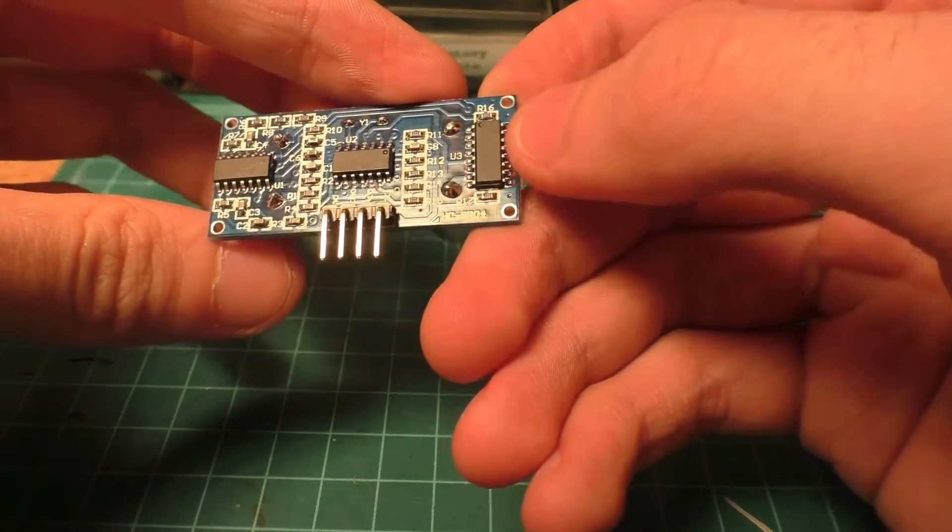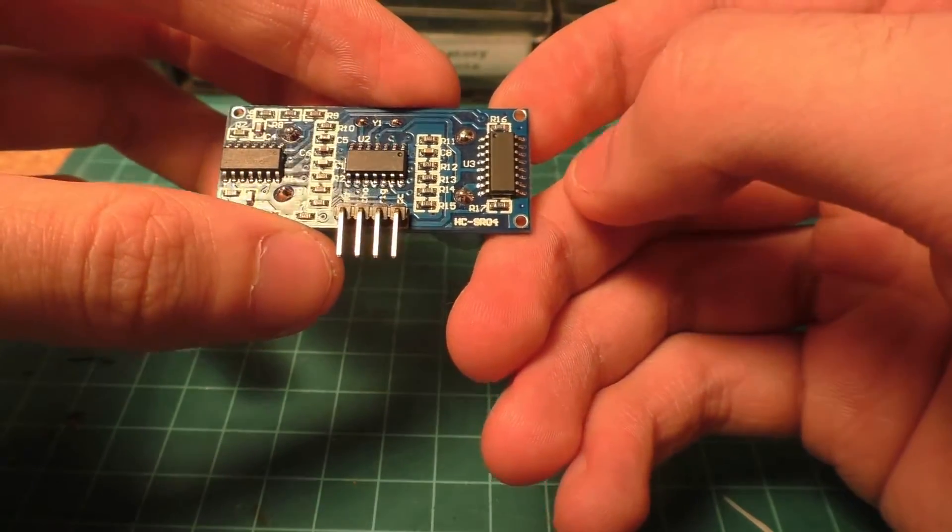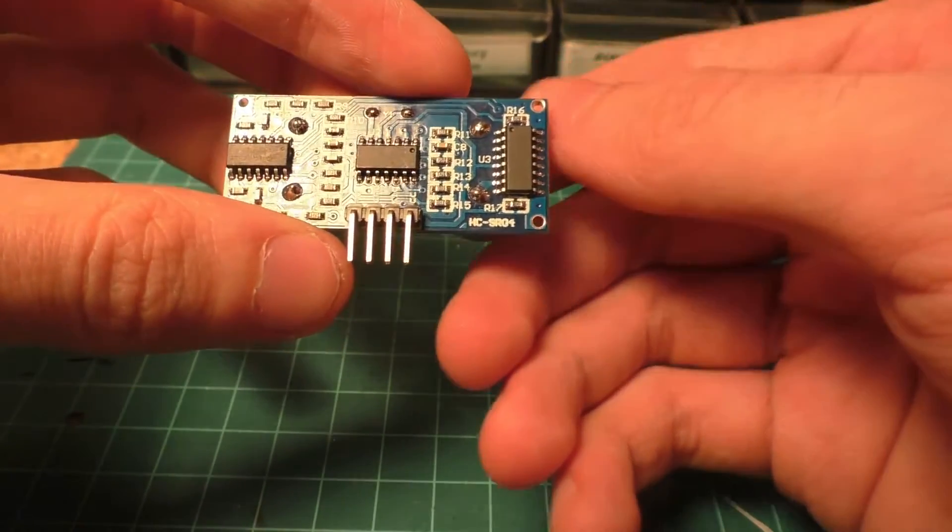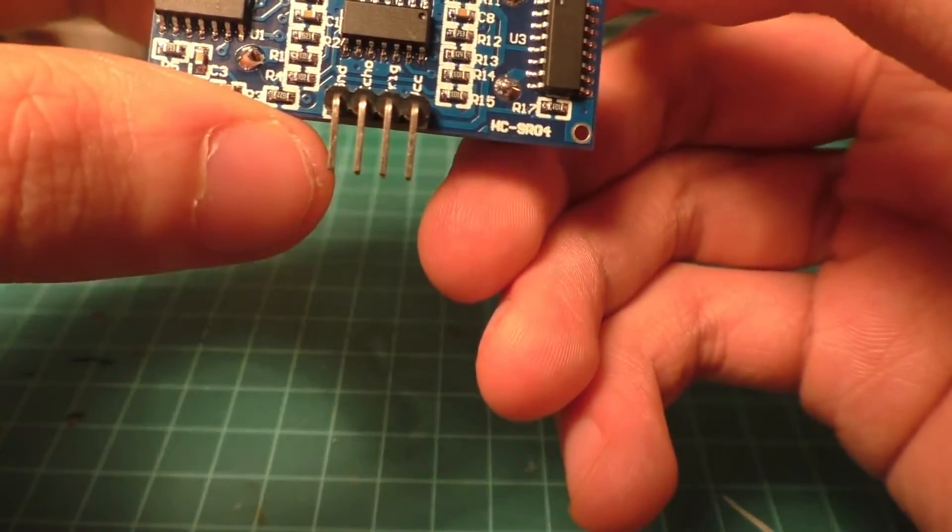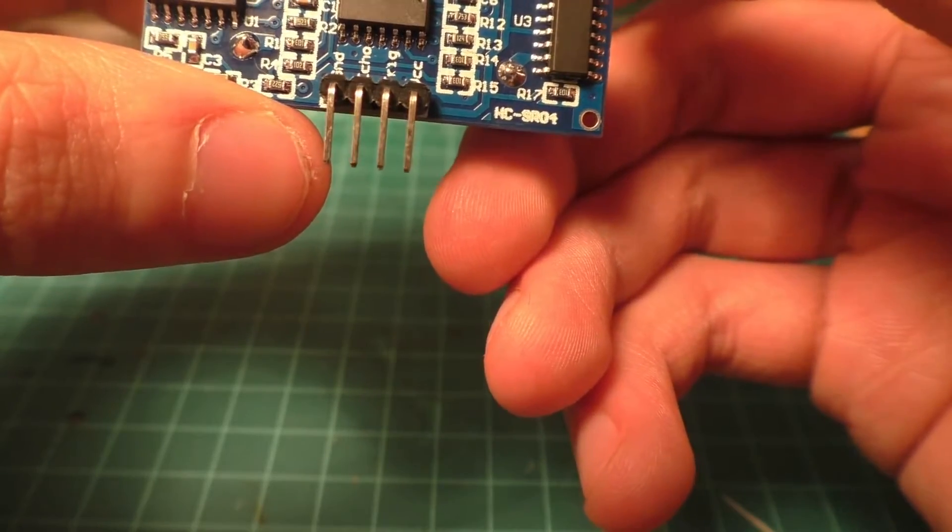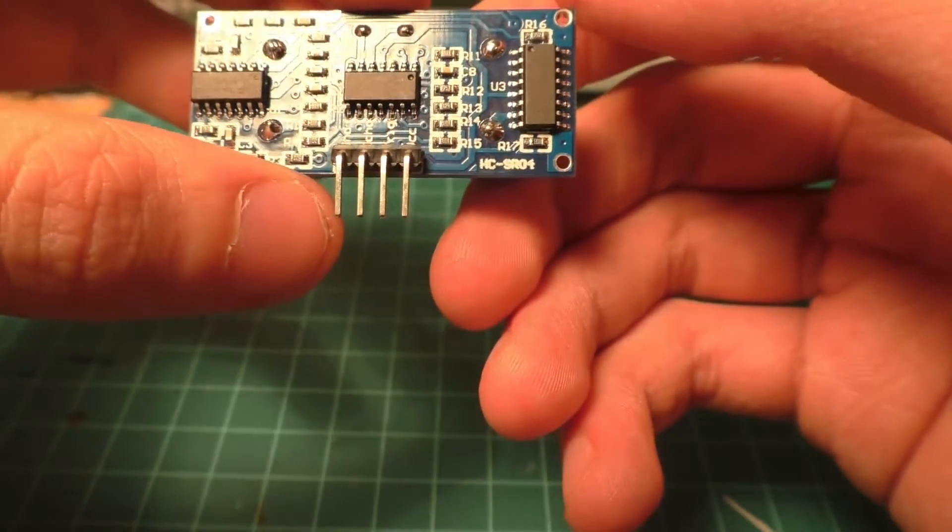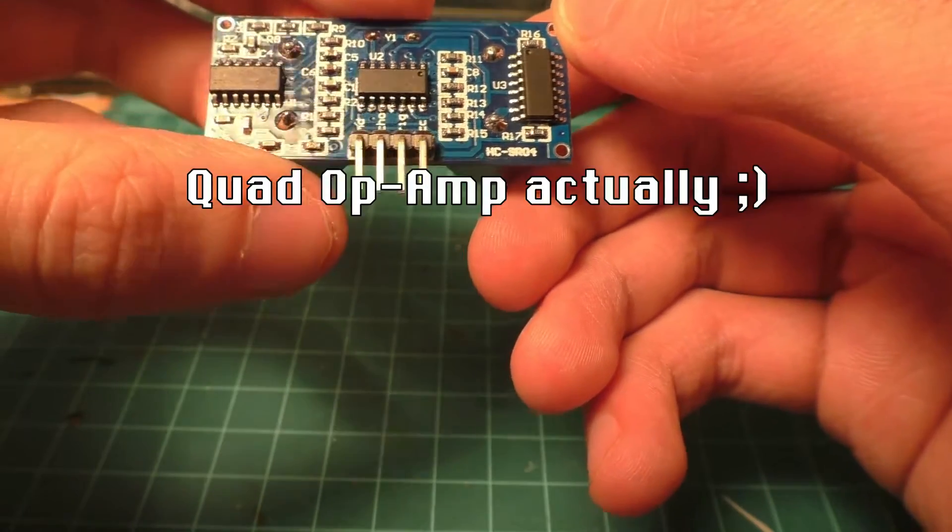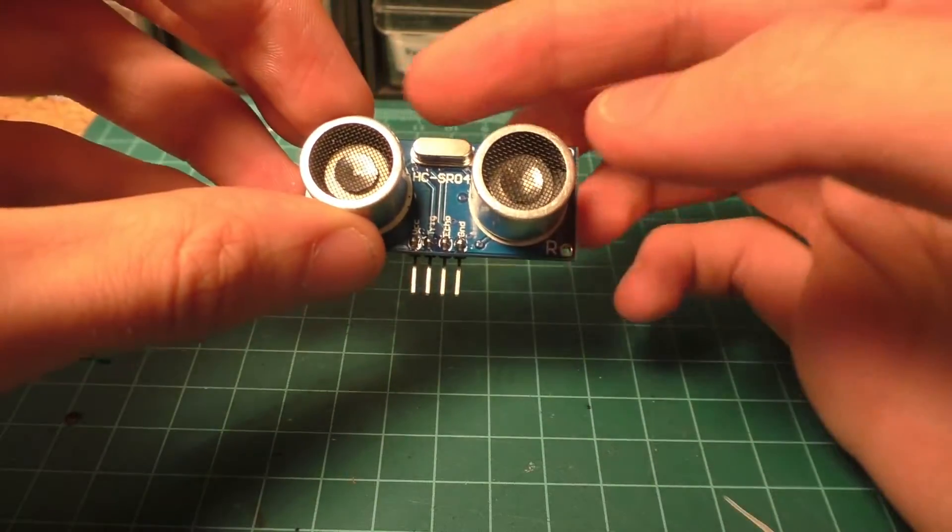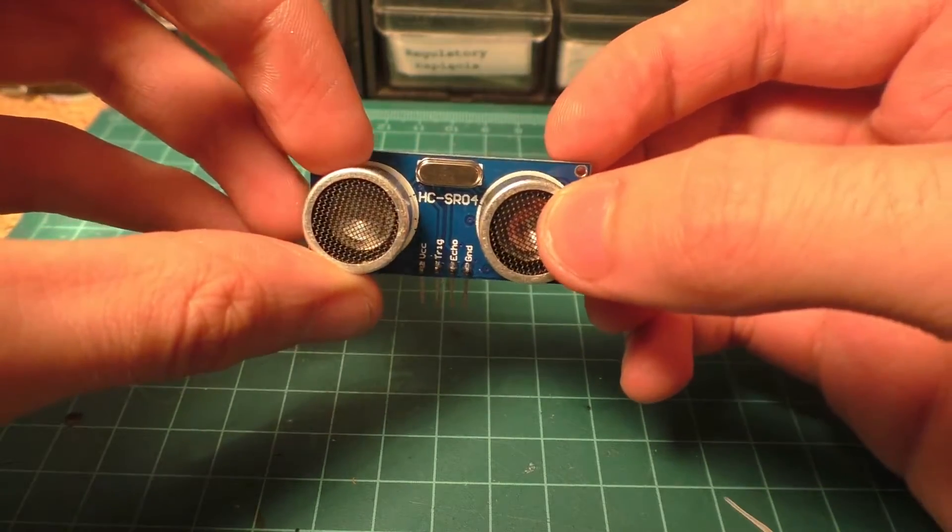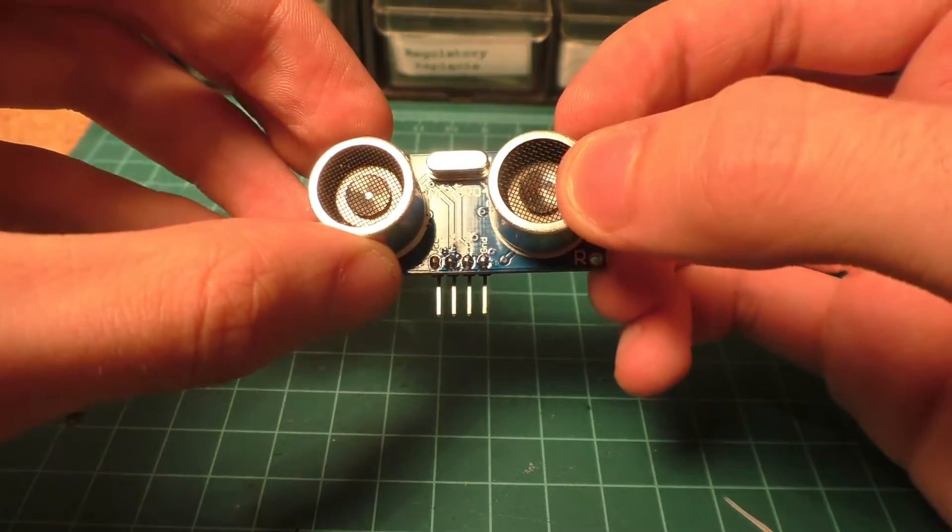On the back it has three integrated circuits. Unfortunately two of them have no marking on them, and the third one is LM324 and that's a double op amp. On the front there is a crystal with no marking at all so that's not nice.